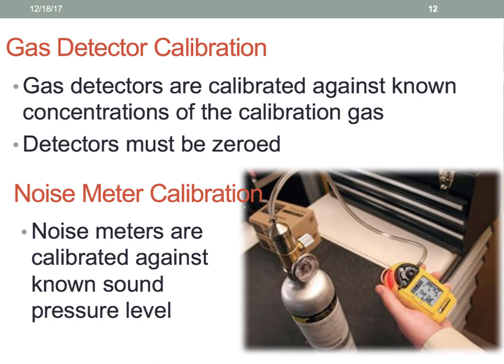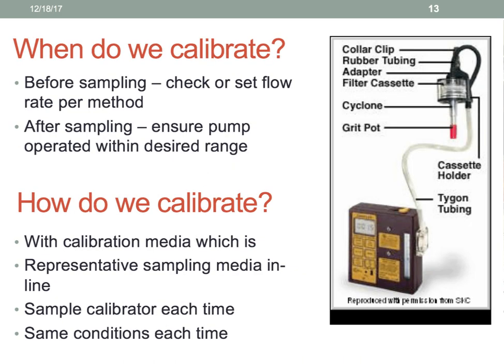So when do we calibrate? We calibrate before we sample to check or set the flow rate to make sure we're pulling air at the appropriate volume. Then after we sample, we don't touch our pump — we just check the flow rate to see if there's a significant difference or not. We calibrate after our pump has been warmed up, with a representative sampling media in line, exactly as we're going to sample. We try to do our pre and post calibrations at about the same sampling conditions.